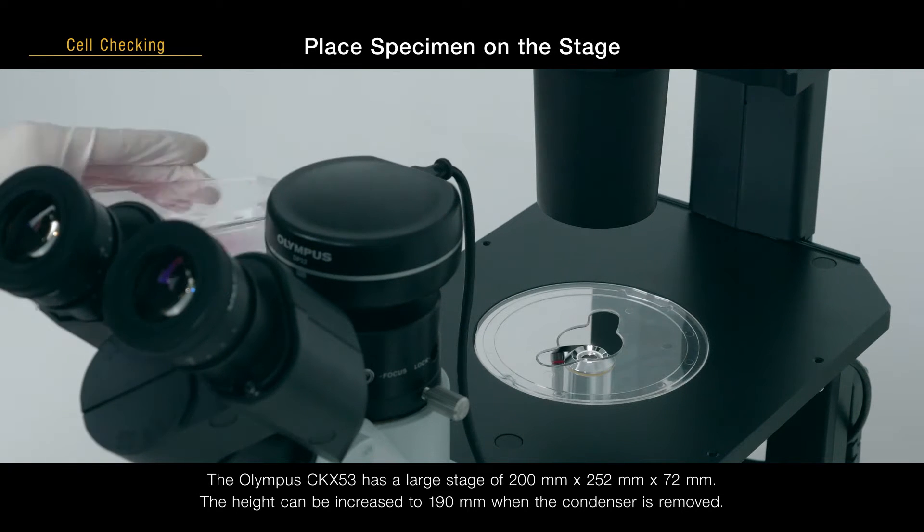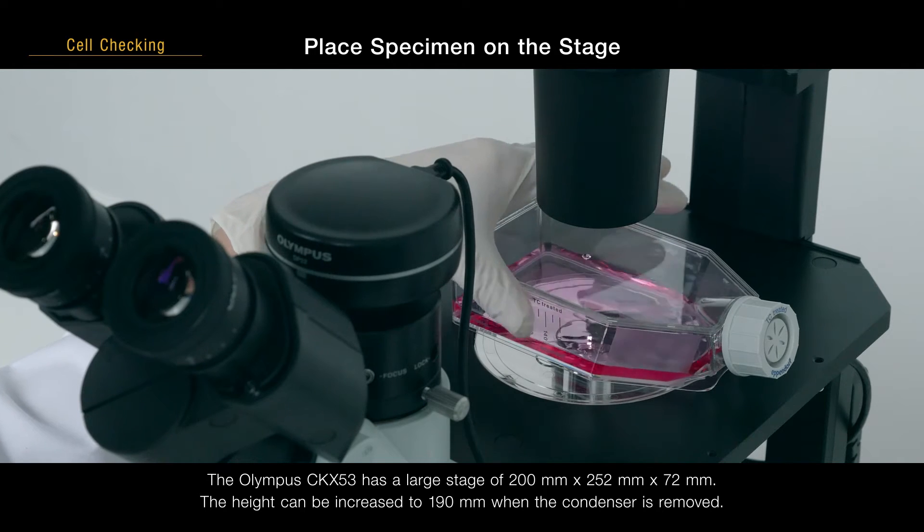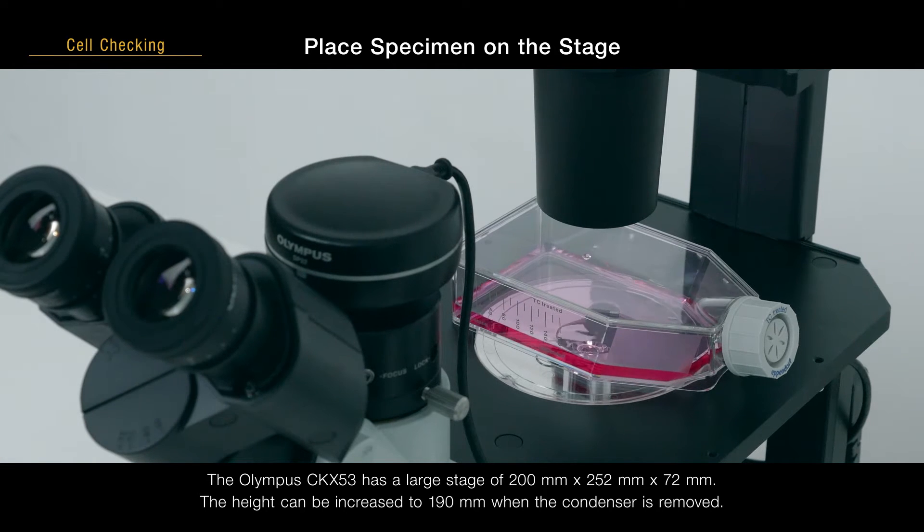The Olympus CKX-53 has a large stage of 200 mm by 252 mm by 72 mm. The height can be increased to 190 mm when the condenser is removed.